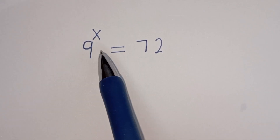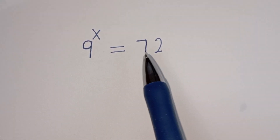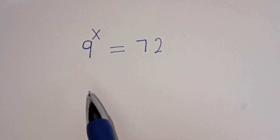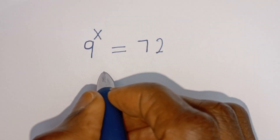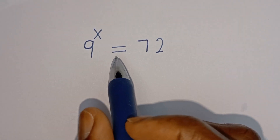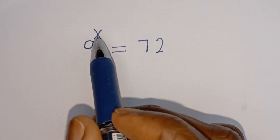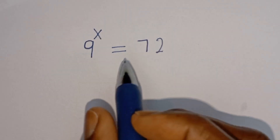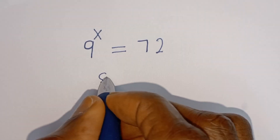Hello, how to solve this nice math problem? 9 to the power of s is equal to 72. Solution: